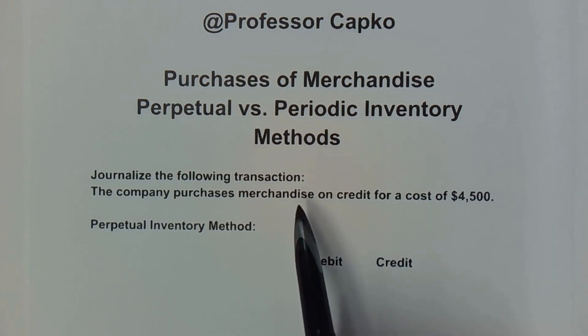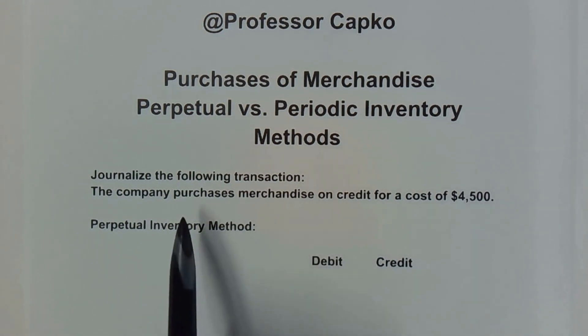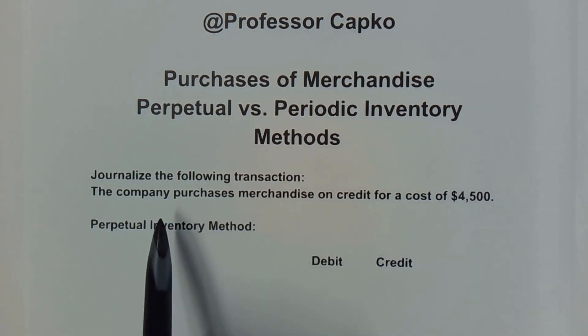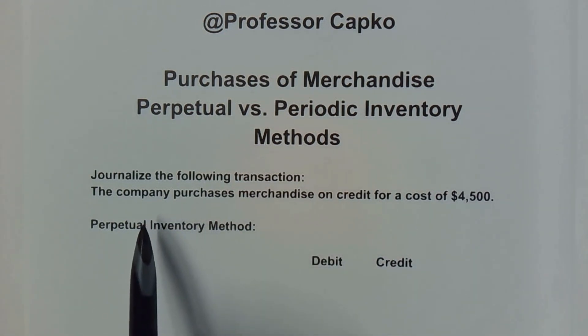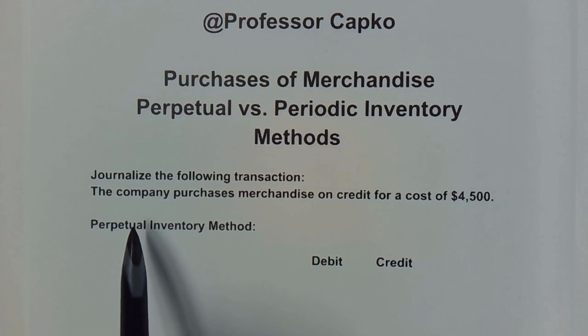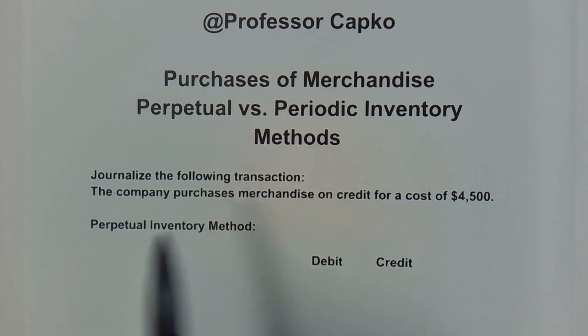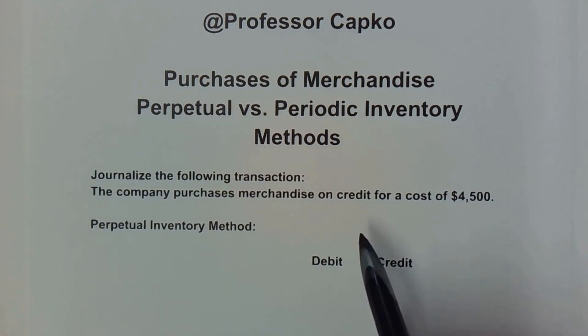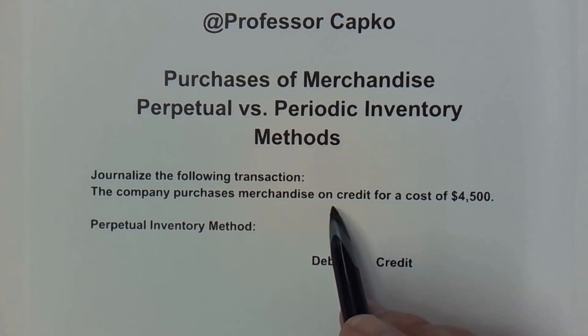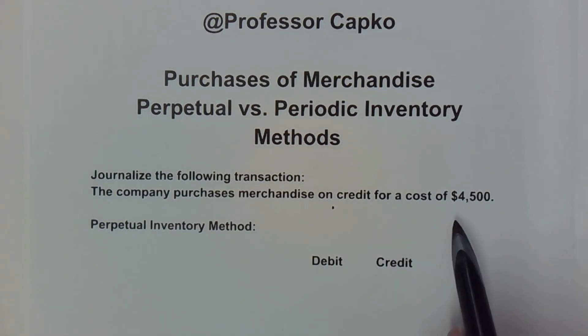In our example, we're going to journalize the following transaction: the company purchases merchandise on credit for a cost of $4,500.